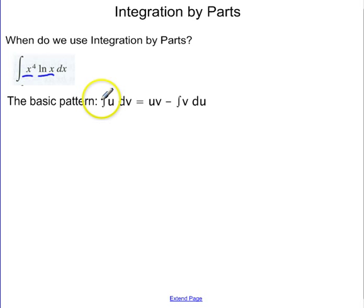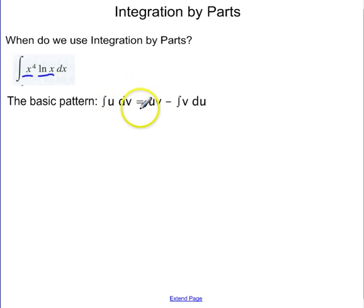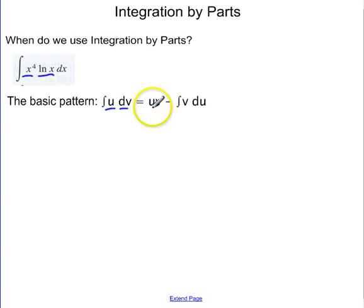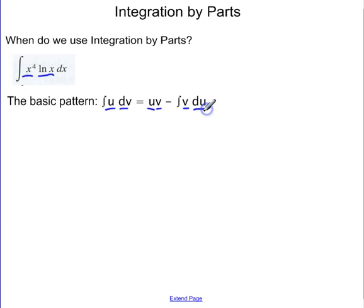I really can't do any u du substitution, so we use what's called integration by parts. Here's the basic pattern: the integral of u dv is equal to u times v minus the integral of v du.